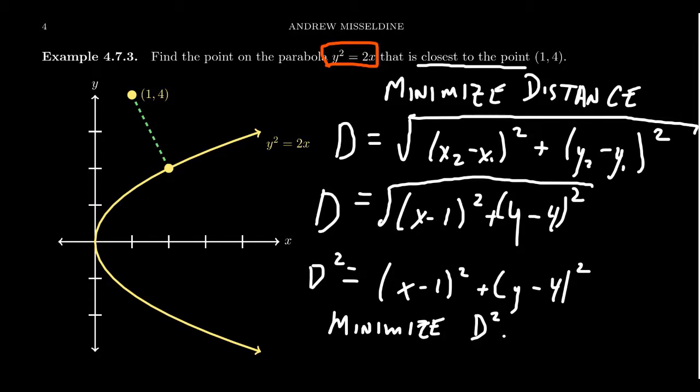You have y squared equals 2x. Think about the forthcoming derivative. If you solve for y, you get y equals the square root of 2x. Uh-uh. We don't want square roots in our derivative, but we can avoid it. On the other hand, if you divide both sides by 2, you get x equals y squared over 2. And that's going to be a much simpler calculation in terms of the derivative. So we're going to make that substitution in for x right here.